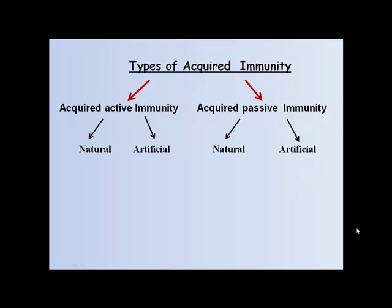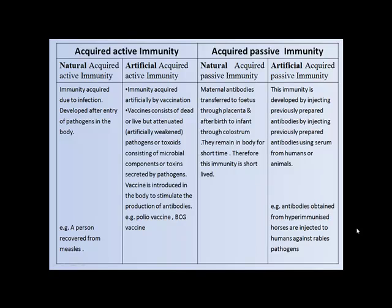In natural acquired active immunity, immunity is acquired due to infection developed after entry of pathogens into the body. Example: a person recovered from measles infection. In artificial acquired active immunity, immunity is due to vaccination. Examples include the polio vaccine and BCG vaccine.